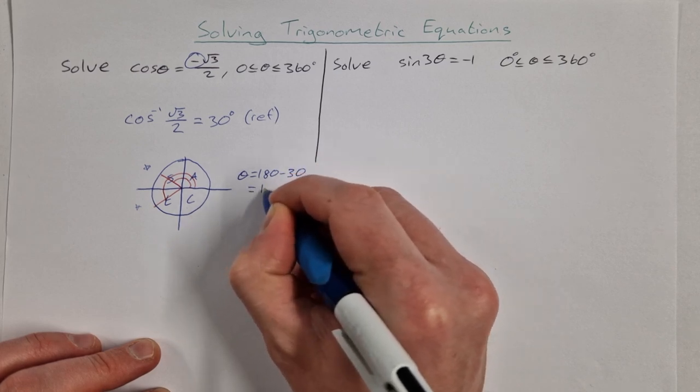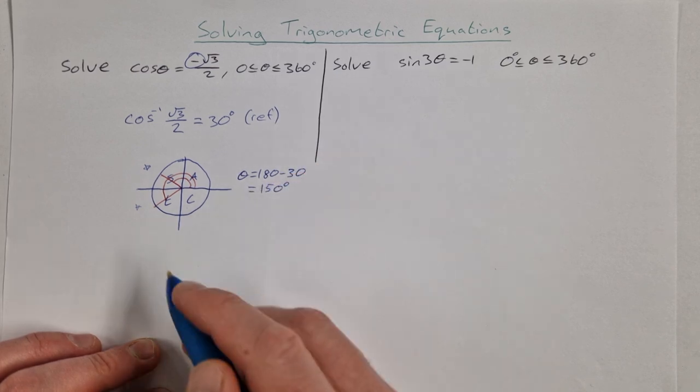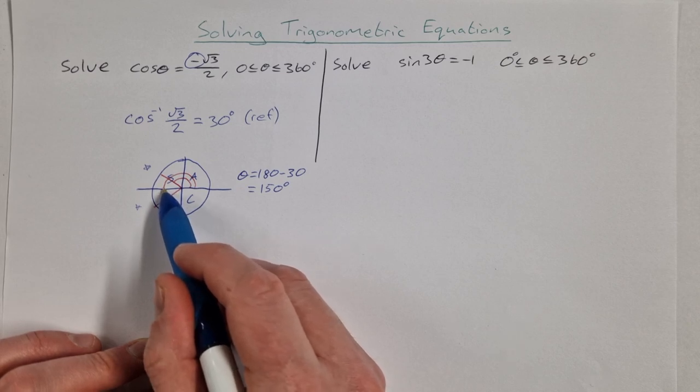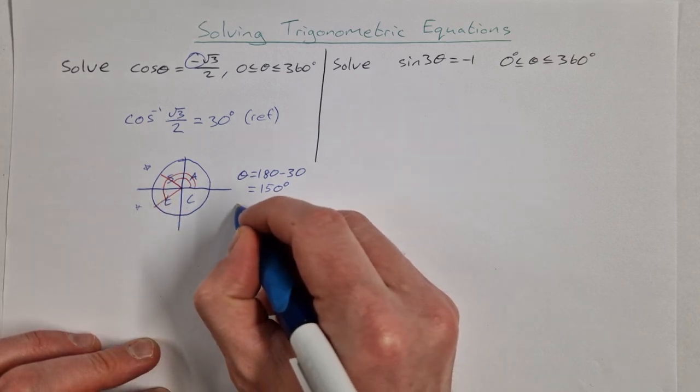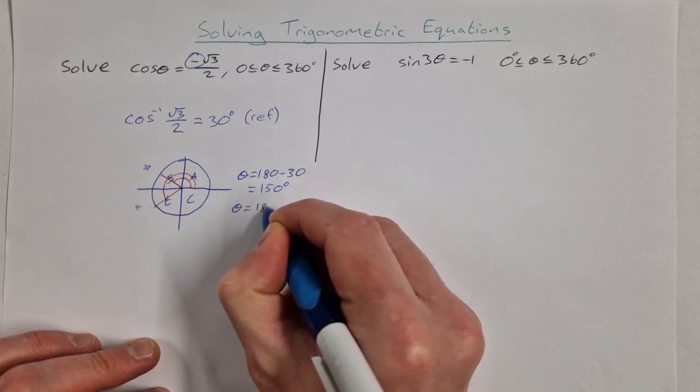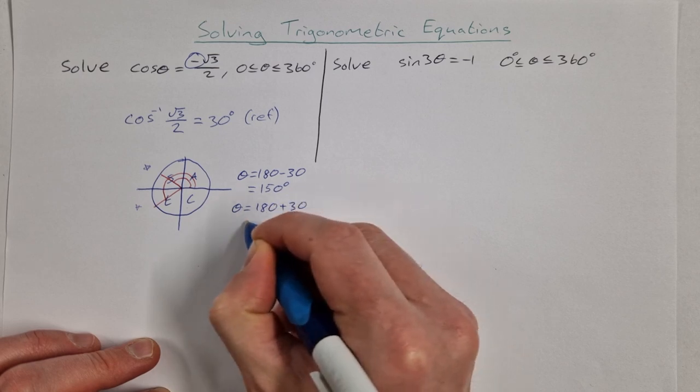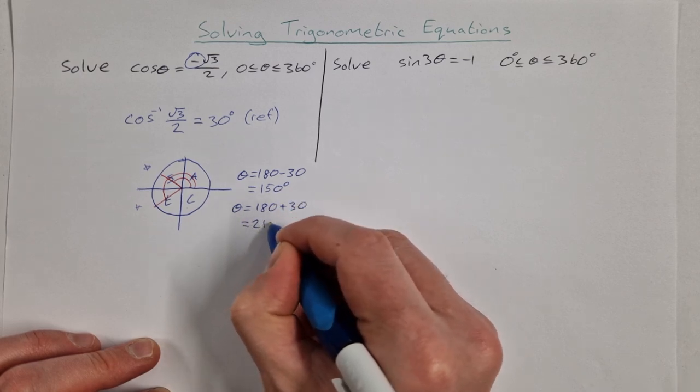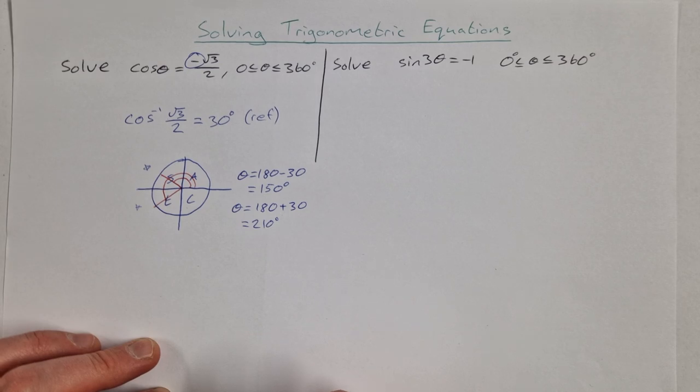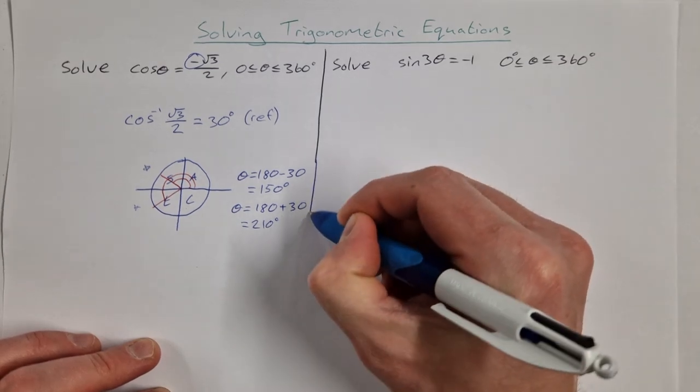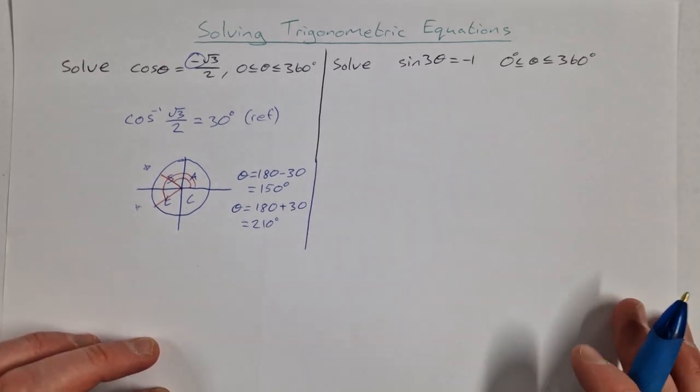which is going to be 150 degrees. And into quadrant 3, it's 180 plus your reference angle, so theta is equal to 180 plus 30, which is equal to 210 degrees. So that's our first question done there and the two answers, 150 and 210.